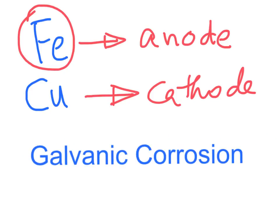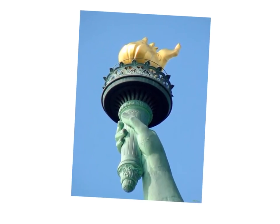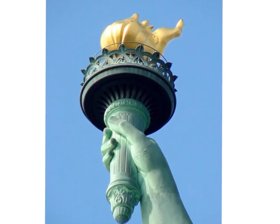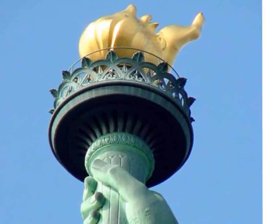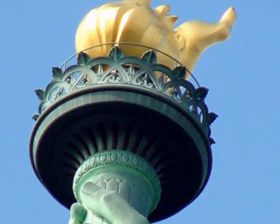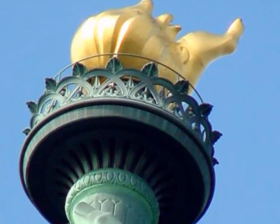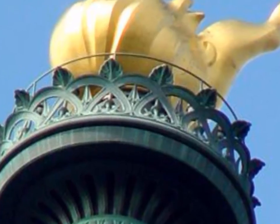The statue underwent major restoration from 1984 to 1986. The torch was redesigned with copper flames and gold leaf covering that would reflect the outside light. The shell-like insulation was replaced by a PTFE insulation and the iron armature was replaced by stainless steel. Now the Statue of Liberty, which symbolizes freedom from tyranny and oppression, is stronger than ever.